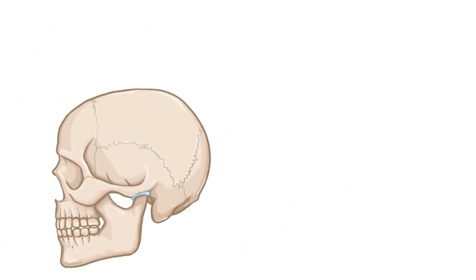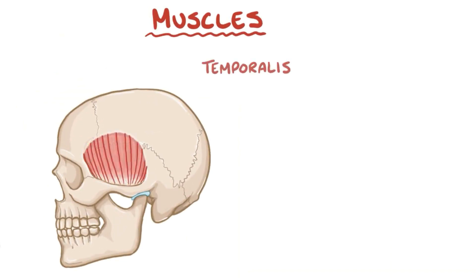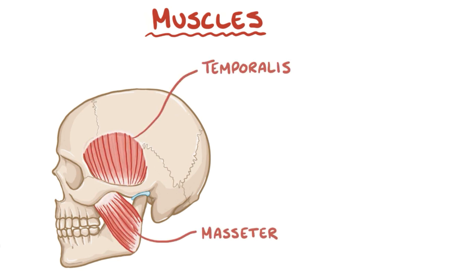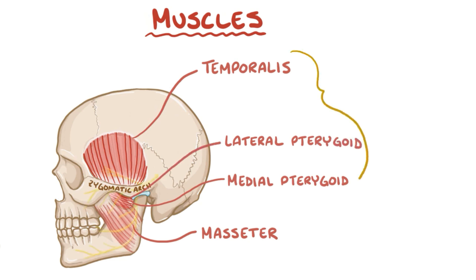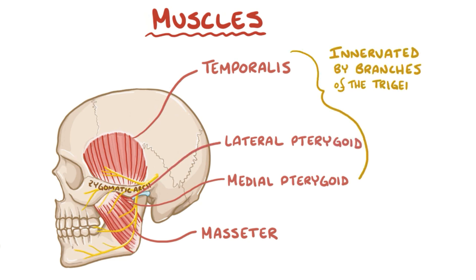The movements of the temporomandibular joint are coordinated by numerous muscles, including the temporalis, which is a fan-shaped muscle on both sides of the cranium; the masseter, which connects to the mandible and the zygomatic arch of the temporal bone; the medial pterygoid, which connects to the mandible and medial aspects of the lateral pterygoid plate; and the lateral pterygoid, found at the condylar process. These muscles are innervated by branches of the trigeminal nerve.